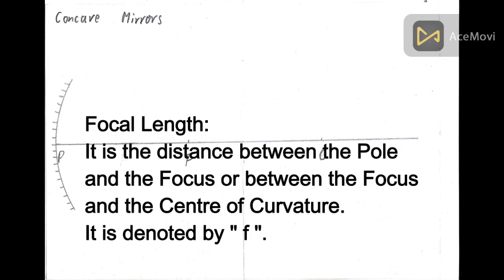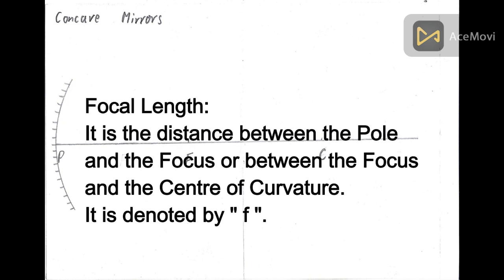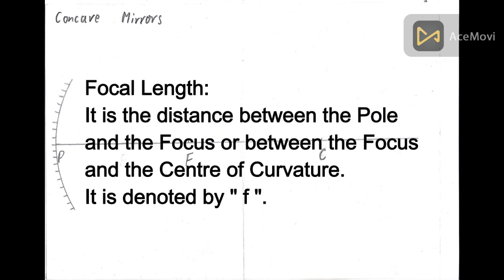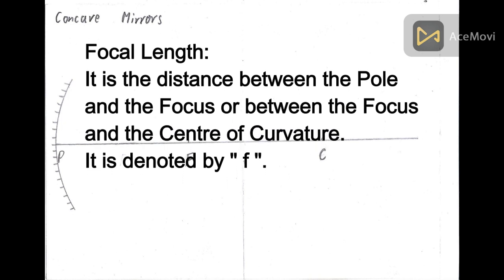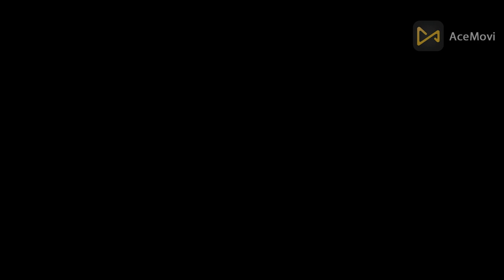Focal length - it is the distance between the pole and the focus or the focus and the center of curvature. It is denoted by f. Now let us know what is magnification. It is the ratio of the image to the object. It can be calculated as height of the image by height of the object, which is denoted as hi by ho, or minus v by u.